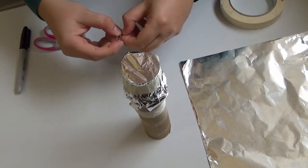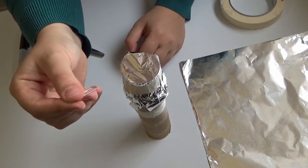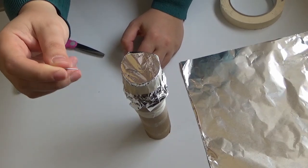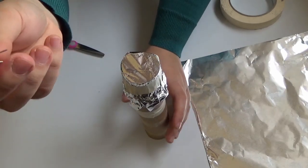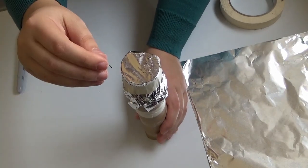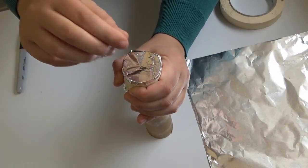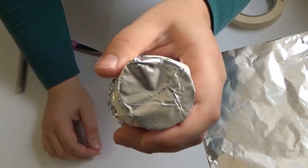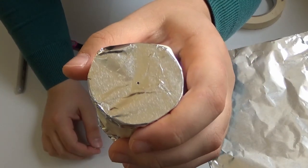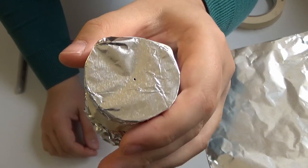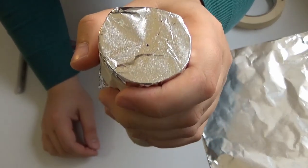Then grab a small pointed object. I'm just using a paper clip, but you can use a recently sharpened pencil or anything that will make a really small pinhole in our camera. So we're just going to poke a tiny, tiny hole in the top, and this is our pinhole. This allows light into the camera.